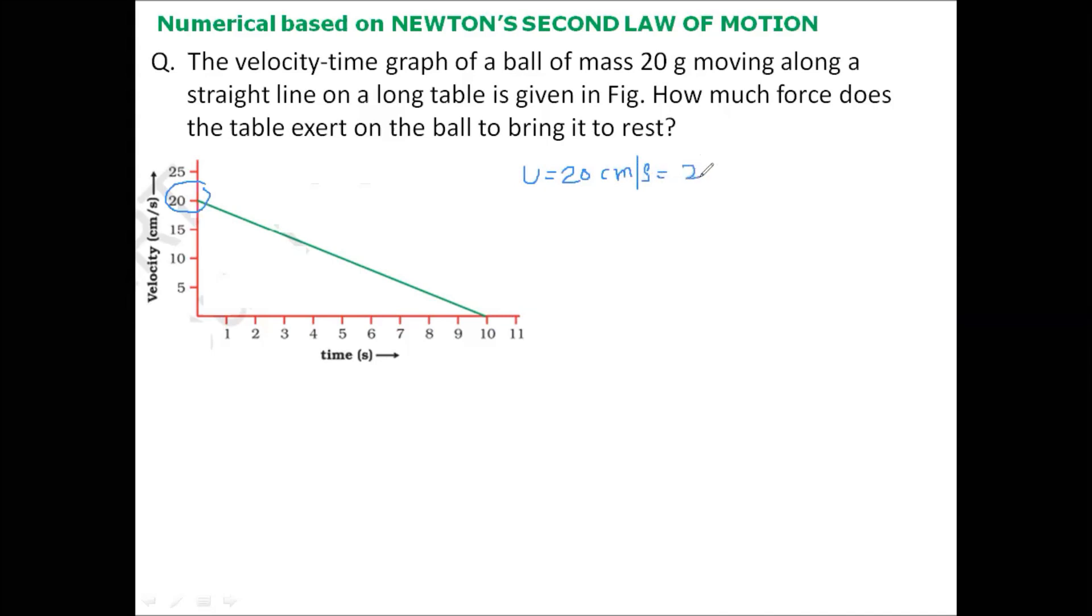If we convert this into meters, we divide by 100, which comes out to be 0.2 meters per second. We need to convert this into SI units; the SI unit of speed is meters per second. From the graph we can observe that the ball finally stops, so the final velocity of the ball is 0 meters per second. It takes 10 seconds to stop. The mass of the ball is also given: 20 grams. We need to convert this into SI units; the SI unit of mass is kilogram, so we divide by 1000. The mass of the ball is 0.02 kg.